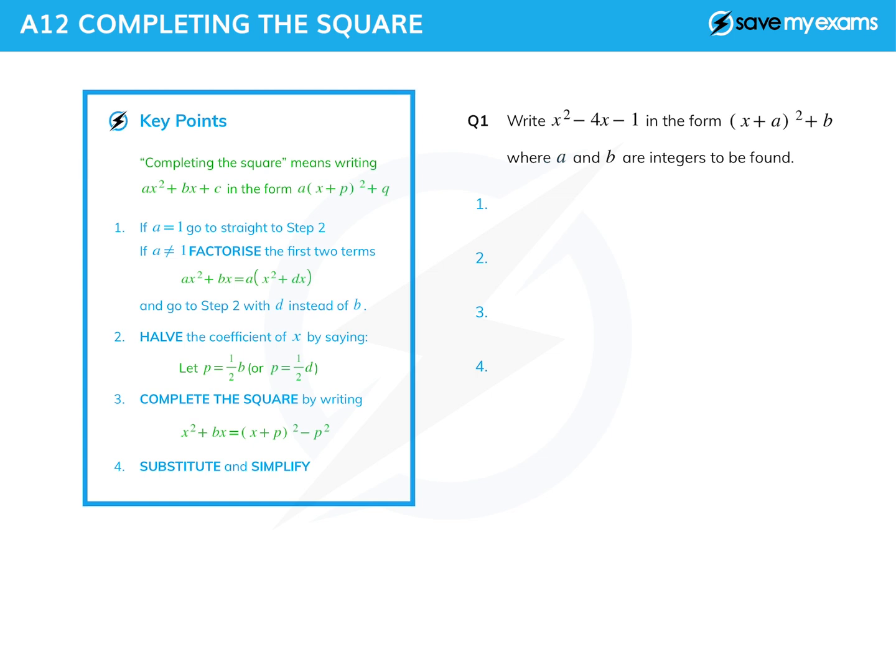Okay, so the first thing you're going to do is establish what a, b, and c are. So let's actually do this as we go through the first question here. Look at the first question. We're asked to write x squared minus 4x minus 1 in a completed square form, where a and b, it says, are integers, that's whole numbers, to be found. So let's actually write down what a, b, and c are. That's always a good idea when you're dealing with quadratics.